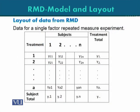Now we look at the data layout for a single factor repeated measures design. If we are using a repeated measures experimental design, we will have a particular form of data so that we can analyze it later. Here we have treatments from 1 to A arranged vertically, and subjects arranged horizontally. The subjects go from 1 to N, and the first observation is Y_1,1.